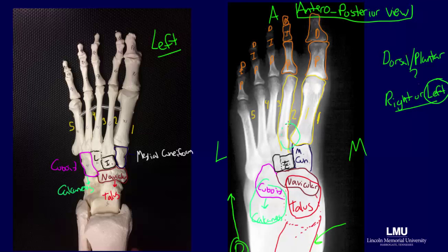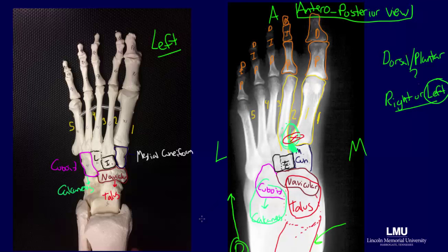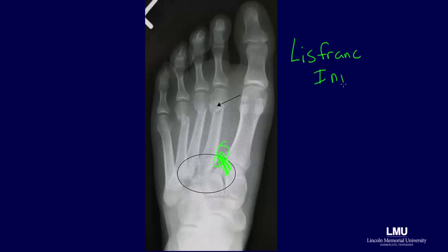After evaluating the cortex of each bone, we turn our attention to spacing, starting at the most proximal portion of the first and second metatarsal. An increase in space here could indicate a Lisfranc injury, when the Lisfranc ligaments connecting the medial cuneiform to the proximal portion of the second metatarsal become damaged, as there is no ligament connecting the most proximal portions of the first and second metatarsals. In this radiograph, we can see an increased space between the most proximal part of the first and second metatarsals, indicating compromise to the Lisfranc ligaments — classified as a Lisfranc injury.